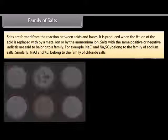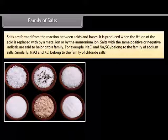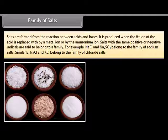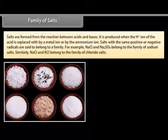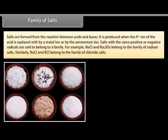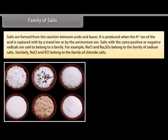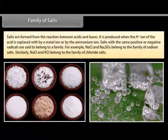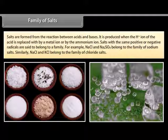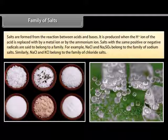Salts are formed from the reaction between acids and bases. A salt is produced when the H+ ion of the acid is replaced by a metal ion, an aluminum ion, or an ammonium ion. Salts with the same positive or negative radicals are said to belong to a family. For example, NaCl and Na2SO4 belong to the family of sodium salts, while NaCl and KCl belong to the family of chloride salts.